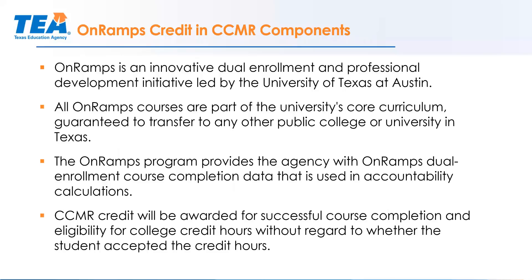OnRamps is dual enrollment through the University of Texas at Austin — it's part of the university's core curriculum, and credit can transfer to other public colleges and universities in Texas. The UT Austin OnRamps program supplies the agency with CCMR credit, and that credit is awarded for successful course completion regardless of whether or not the student accepts the credit hours.